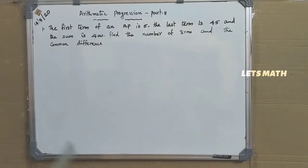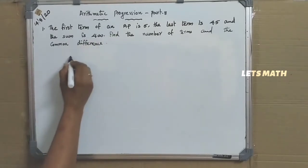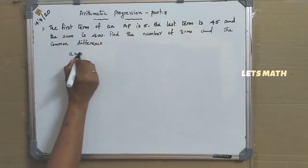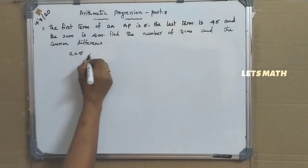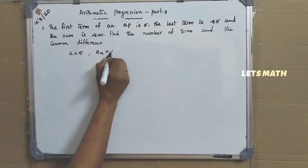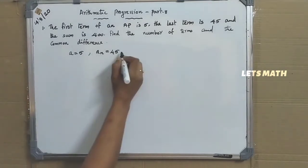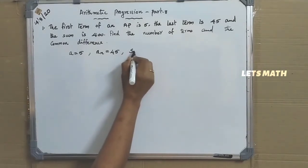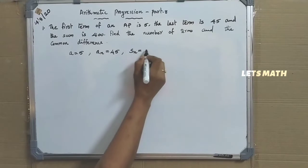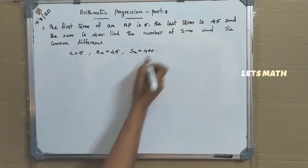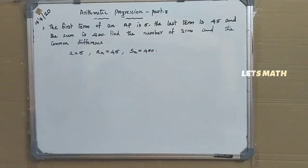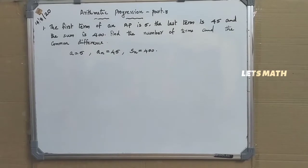What is given here: first term of an AP is 5, that means A equal to 5. Last term is denoted as AN, so last term is equal to 45. And sum, that is SN, is equal to 400. It is asked to find out the number of terms N and the common difference D.